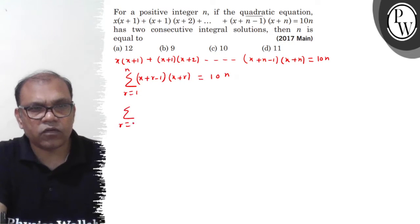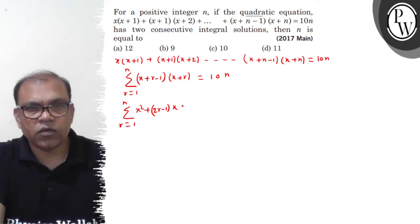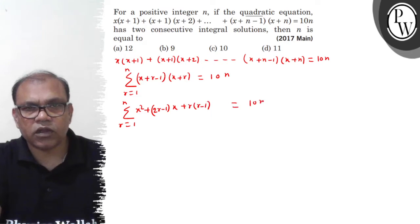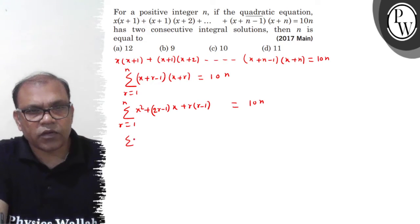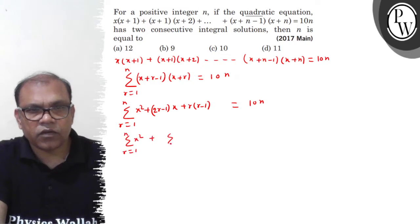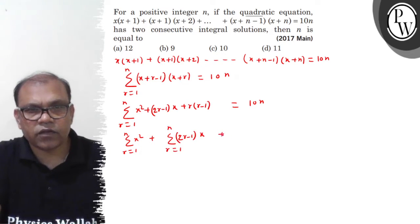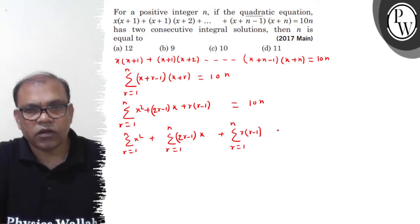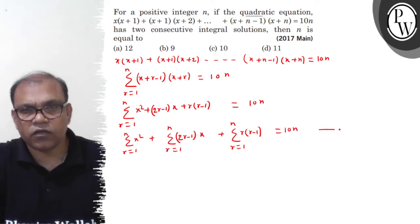After expanding, the summation from r=1 to n of [x² + (2r-1)x + r(r-1)] equals 10n. So, summation of (x+r-1)(x+r) from r=1 to n equals 10n.